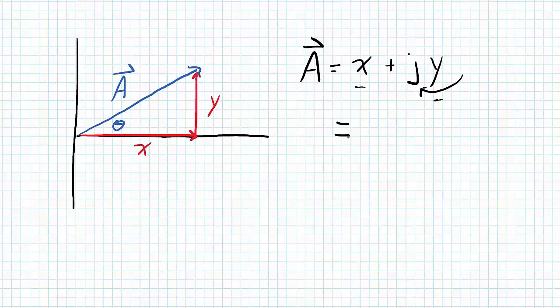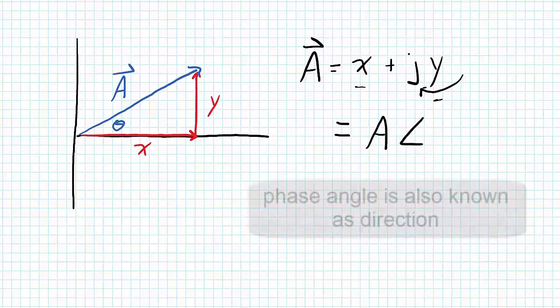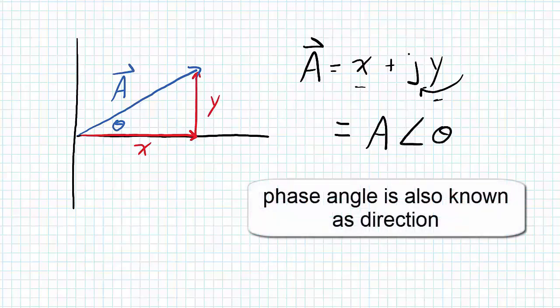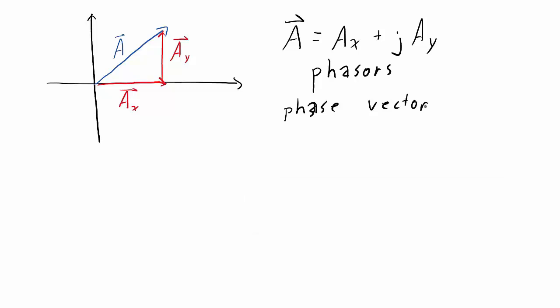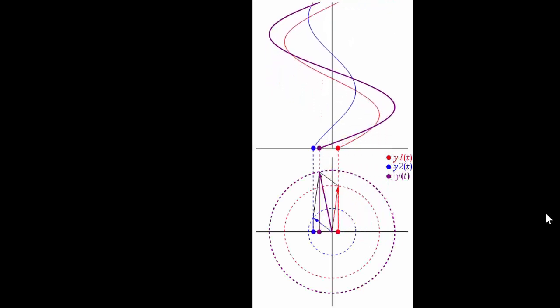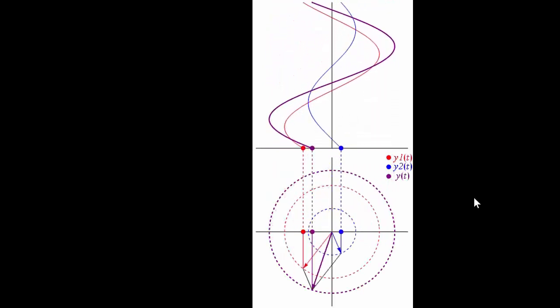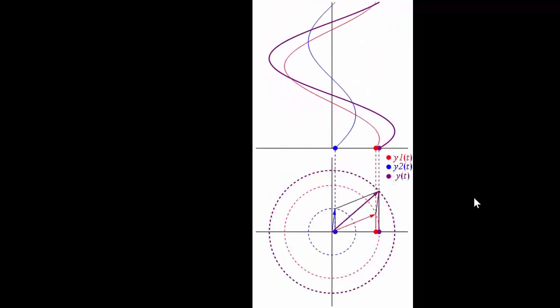I can also write this in polar coordinates. So that phasor A has a magnitude of A and a phase angle of theta. And they're very useful when dealing with circuits that have multiple sinusoidal voltages and currents that are operating at the same frequency but have different phases relative.